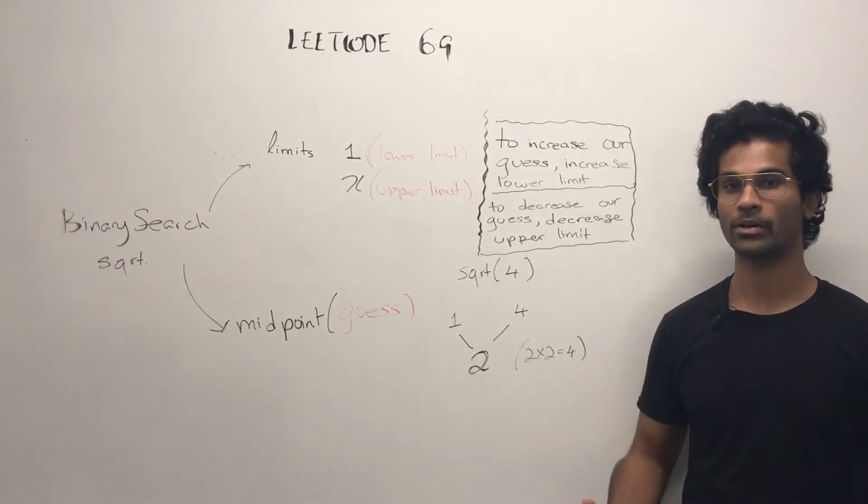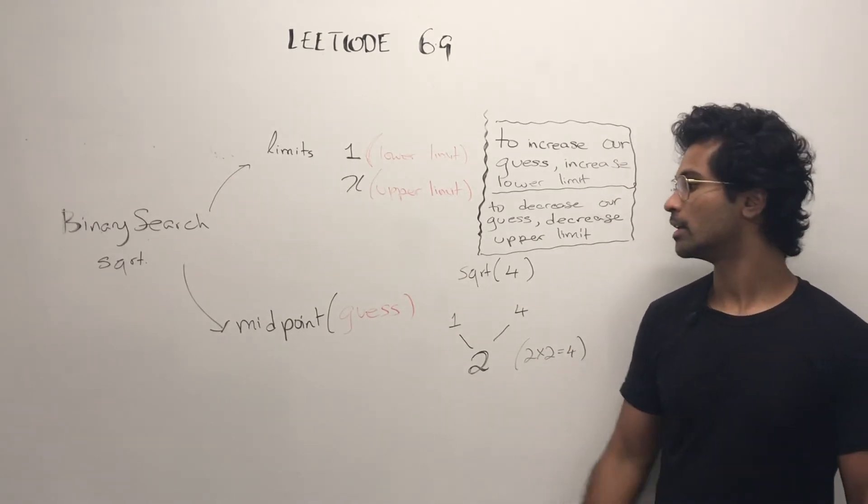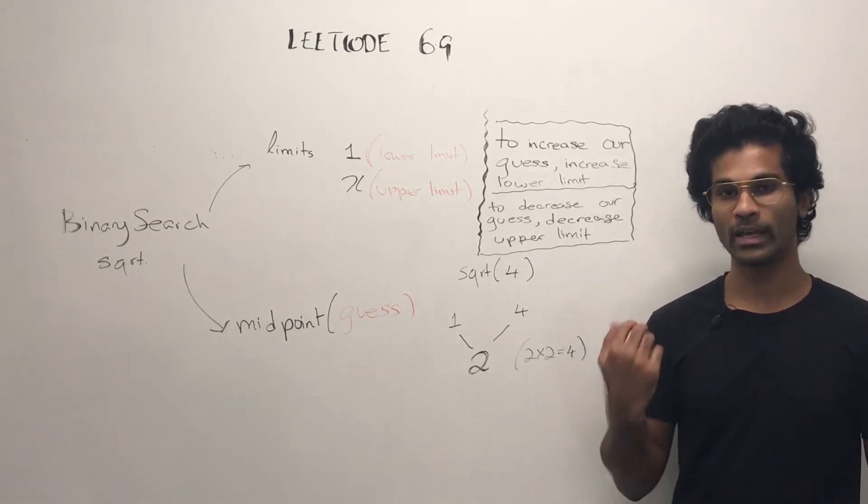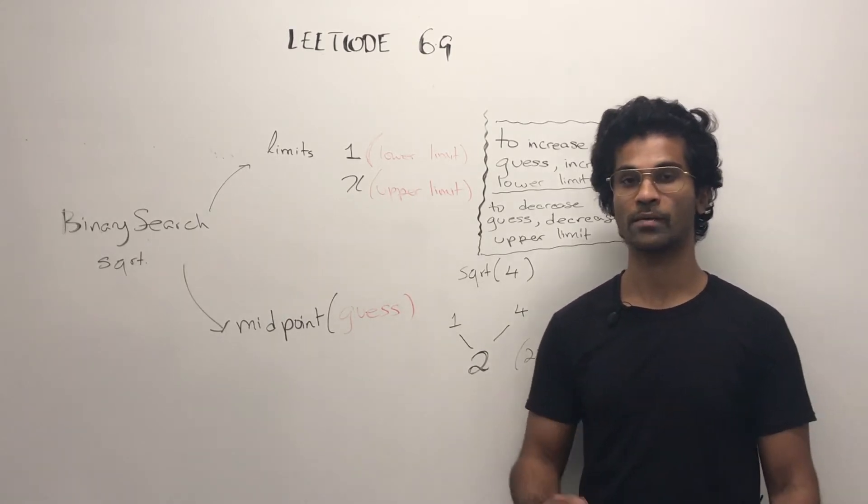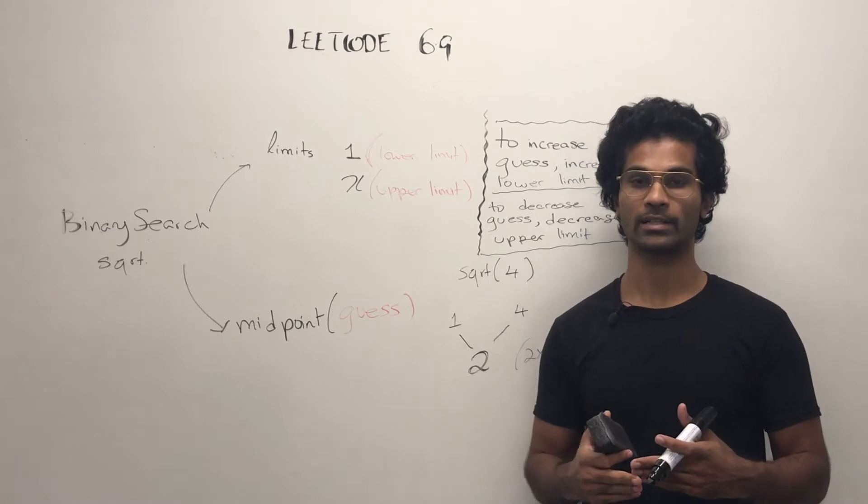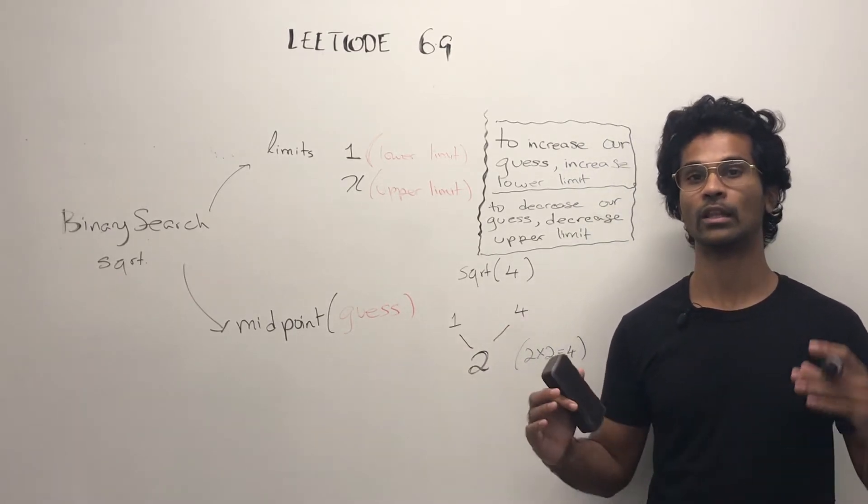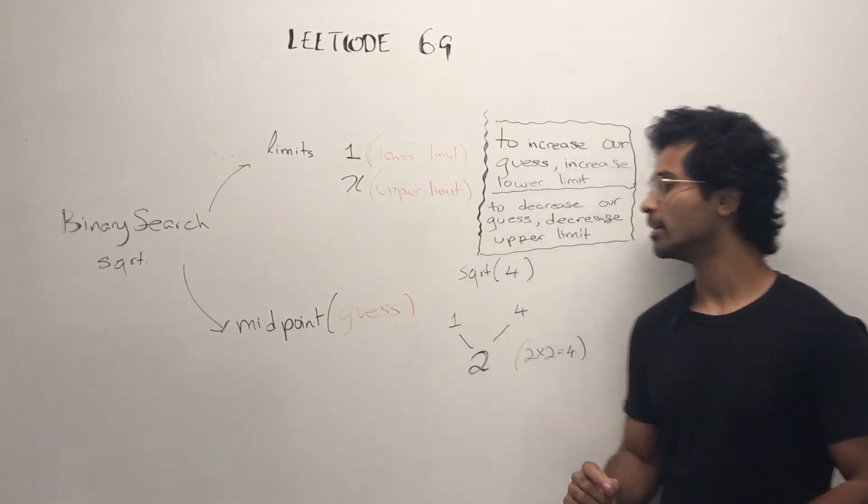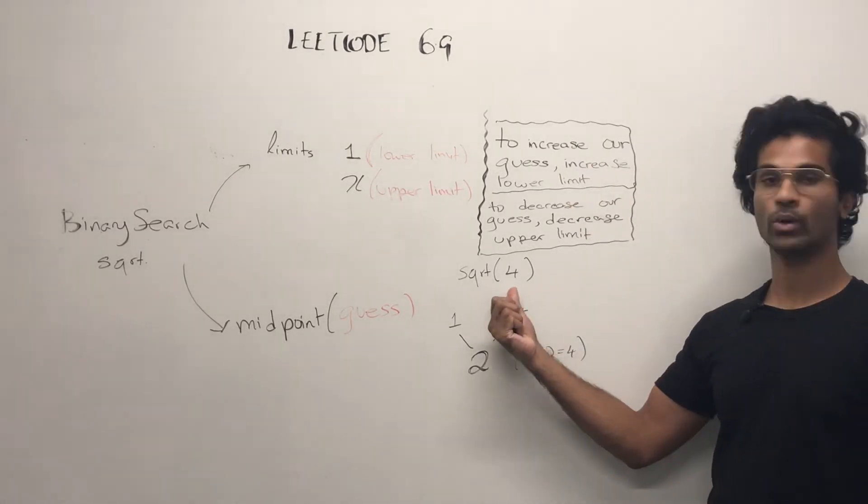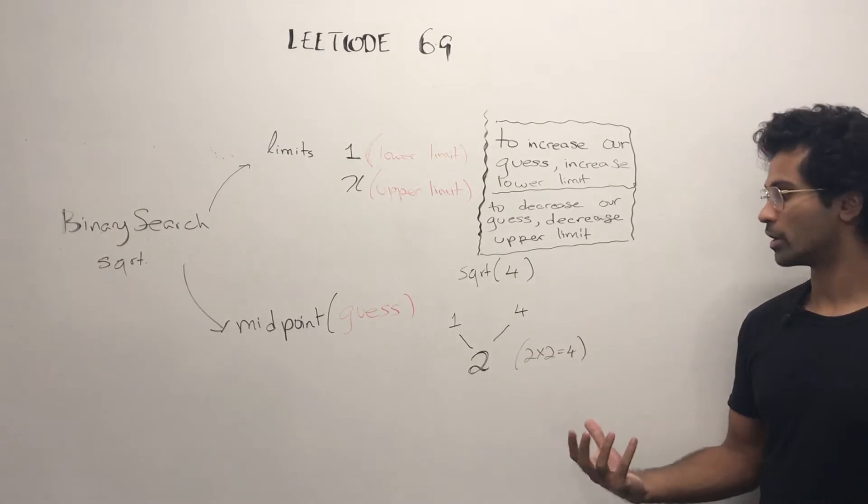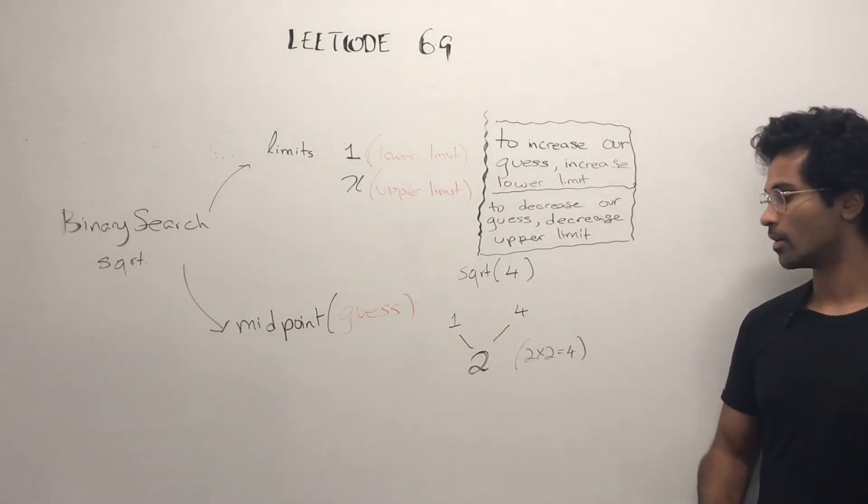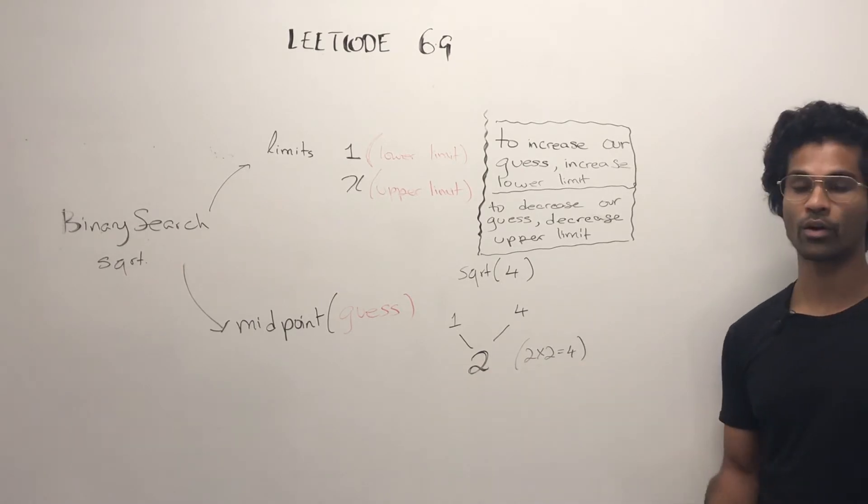The other thing we work with in binary search is the midpoint. The midpoint is actually our guess, so what we guess could be a potential solution. We narrow down our guesses by narrowing down the search space until the limits converge. If we had to find the square root of 4, the midpoint between 1 and 4 is 2, and 2 times 2 is 4, so that checks out.